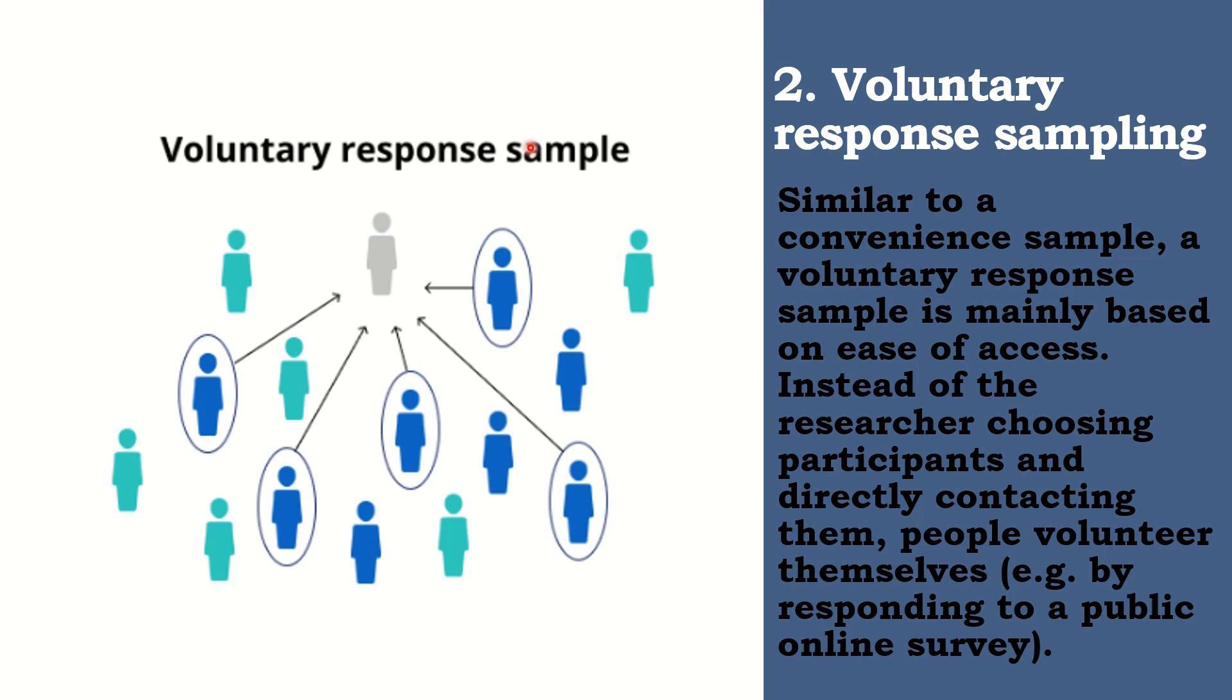Pero, voluntary response samples are always at least somewhat biased. Biased siya. Bakit? Because some people will inherently be more likely to volunteer than others. Halimbawa, you send out the survey to all students at your school, and a lot of students decide to complete it. This can certainly give you some insight into the topic. Pero, the people who responded to your survey are likely those with strong opinions about the student support services. You can't be sure that their opinions are representative of all students because they volunteered to answer the survey about that topic. That is voluntary response sampling.